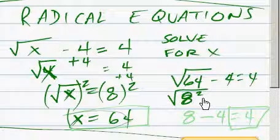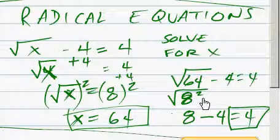64 squared, that's what it looks like. We know that means it's 8 minus 4 equals 4. So the answer is x equals 64.